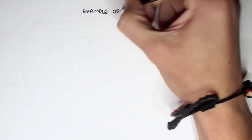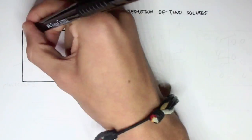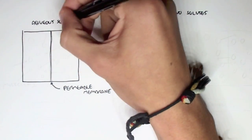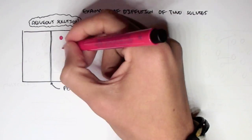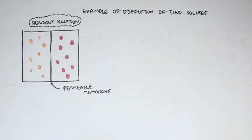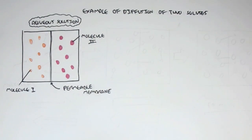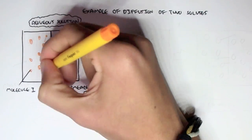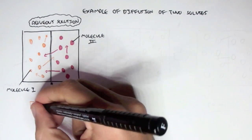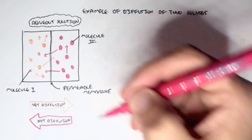Now let's look at an example of diffusion with two solutes. We have a container with a permeable membrane in an aqueous solution. Solute one is red and solute two is orange. There is more orange on the left and more red on the right. The net diffusion of orange moves from an area of high concentration to an area of low concentration, so orange moves to the right.